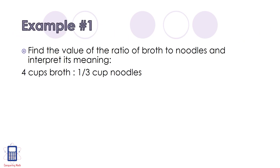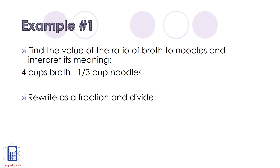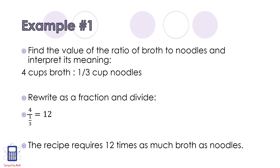For example number 1, we need to find the value of the ratio of broth to noodles and interpret its meaning. We have 4 cups of broth to 1 third cup of noodles. So the first thing we need to do is rewrite it as a fraction and then divide. So we write 4 over 1 third, or 4 divided by 1 third. 4 divided by 1 third equals 12, so this means that the recipe requires 12 times as much broth as noodles.